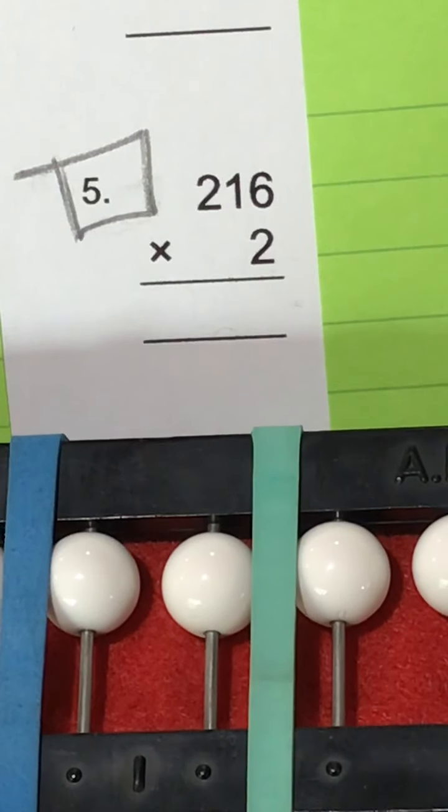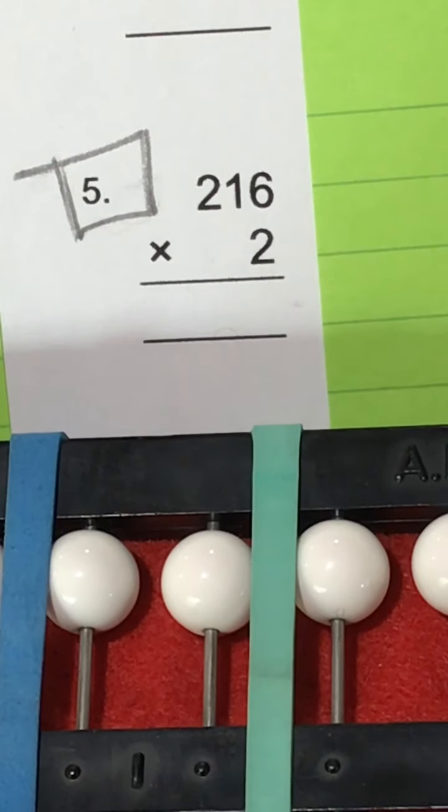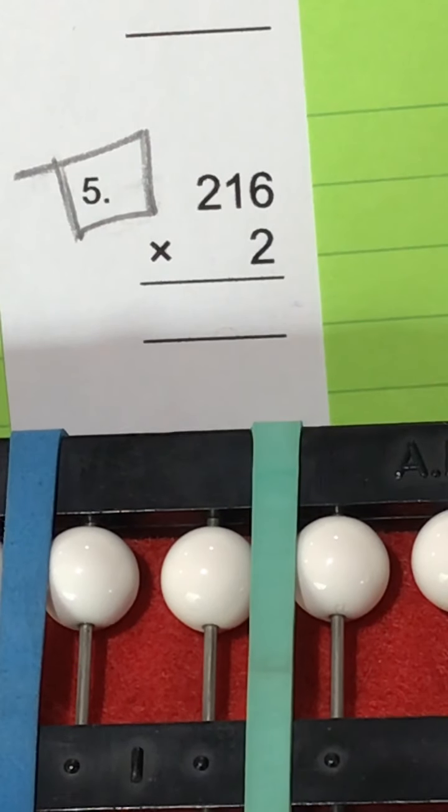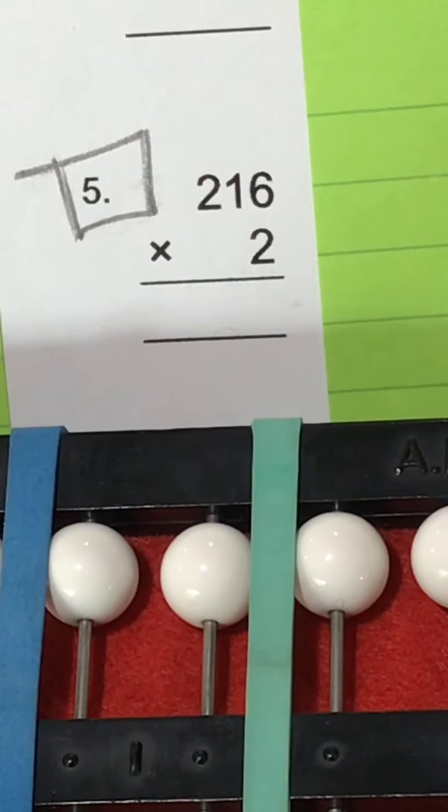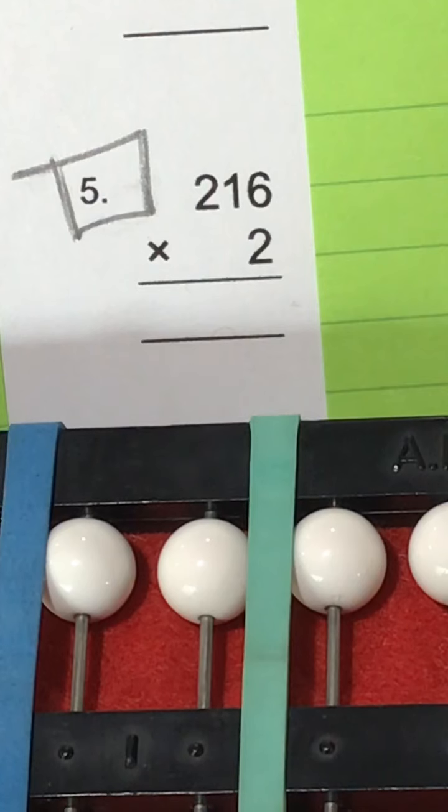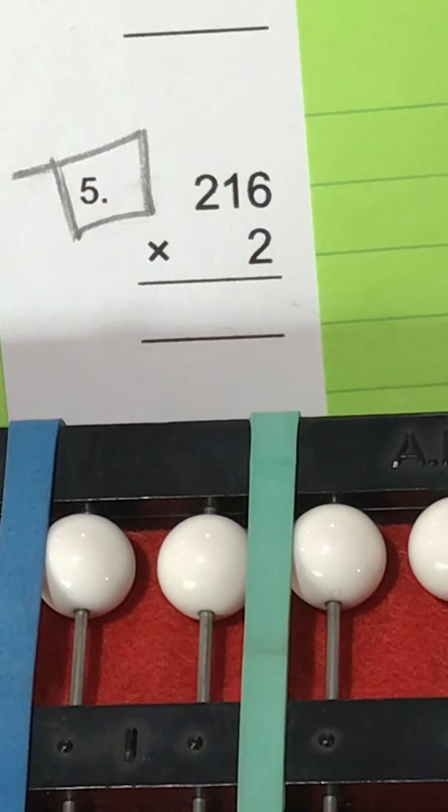Okay friends, today we're going to work on one digit by three digit multiplication. Who's ready? Go ahead and grab your abacus, grab your braille paper and brailler because we're going to braille these out.